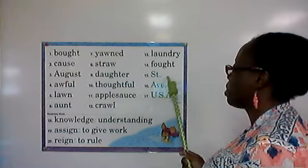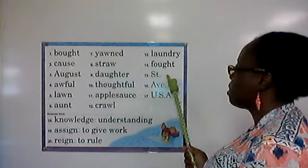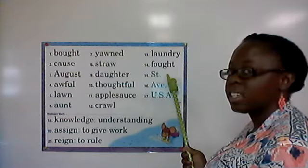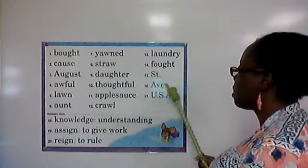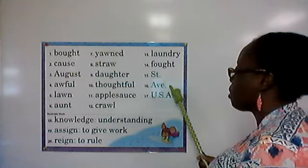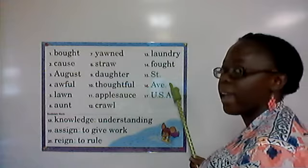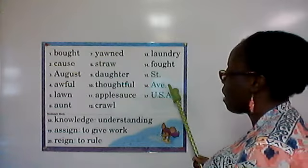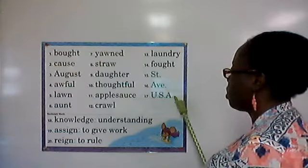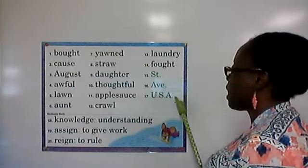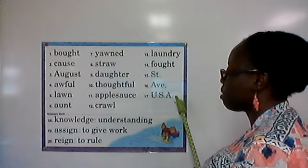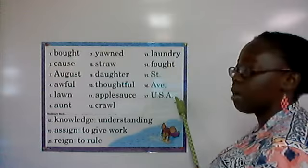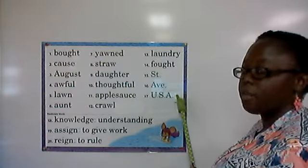Now the four vocabulary words — actually, first the abbreviations: Street, capital S-T period; Avenue, capital A-B-E period; U.S.A., capital U period, capital S period, capital A period.